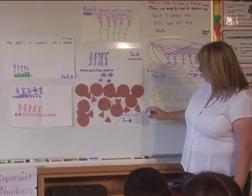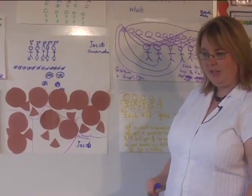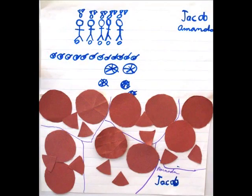Jacob and Amanda, you actually took your cookies. Can you explain what you did here? We cut out of the 2 cookies and glued them on to the sheet of paper, and we decided to cut them into fifths because there was 5 people, and it would be easier if you cut them into fifths.